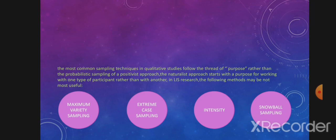Snowball sampling identifies participants who are linked through shared experiences, perspectives, or other factors; participants point the researcher towards other individuals in the same population. People who use library computer labs to play forbidden group-based computer games might be identified through snowball sampling.